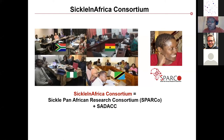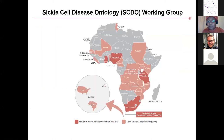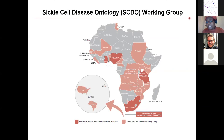Together, SADAC and SPARCO form what we call the Sickle in Africa Consortium. In addition to supporting SPARCO, we also build networks and partnerships with sickle cell disease stakeholders, clinicians, and researchers spread across 21 countries in Africa, and also with researchers based in Brazil, Jamaica, the US, and UK. We hope Asia will join soon. This loose connection of researchers is called the Sickle Cell Pan-African Network, or SPAN. We created a sickle cell disease ontology working group out of the Sickle in Africa Consortium and SPAN.